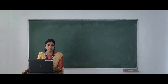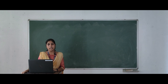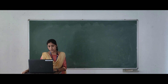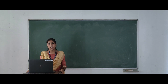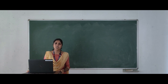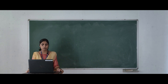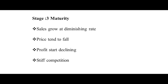In the maturity stage, there is no sales growth — sales become stagnant. One of the main features of maturity stage is that sales grow at a diminishing rate; the firm generates sales but at a diminishing rate, meaning sales tend to fall. The next feature is that price tends to fall. In this stage, the firm earns maximum sales and profit reaches its maximal level. However, because of severe competition, the price of the product tends to fall.